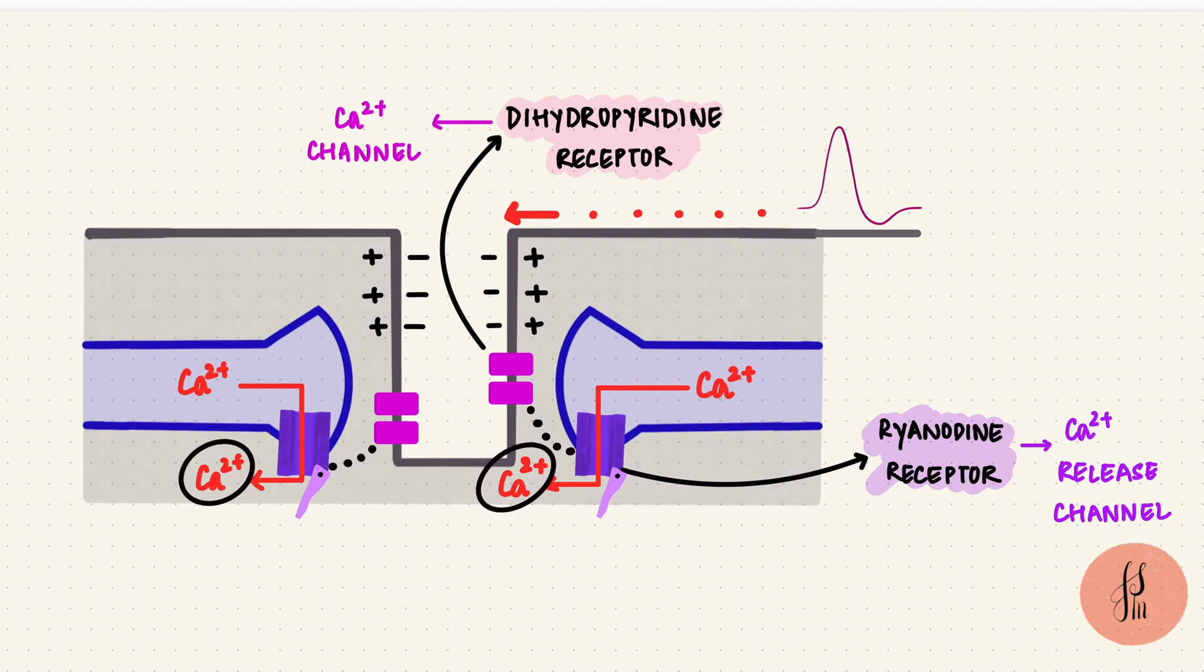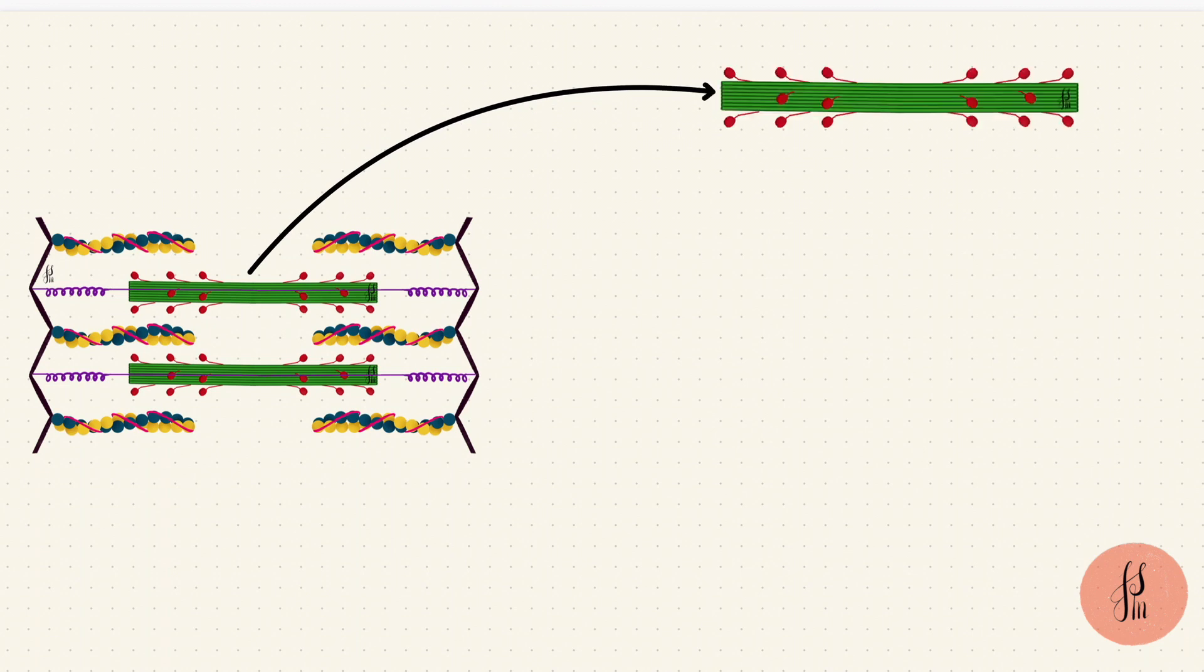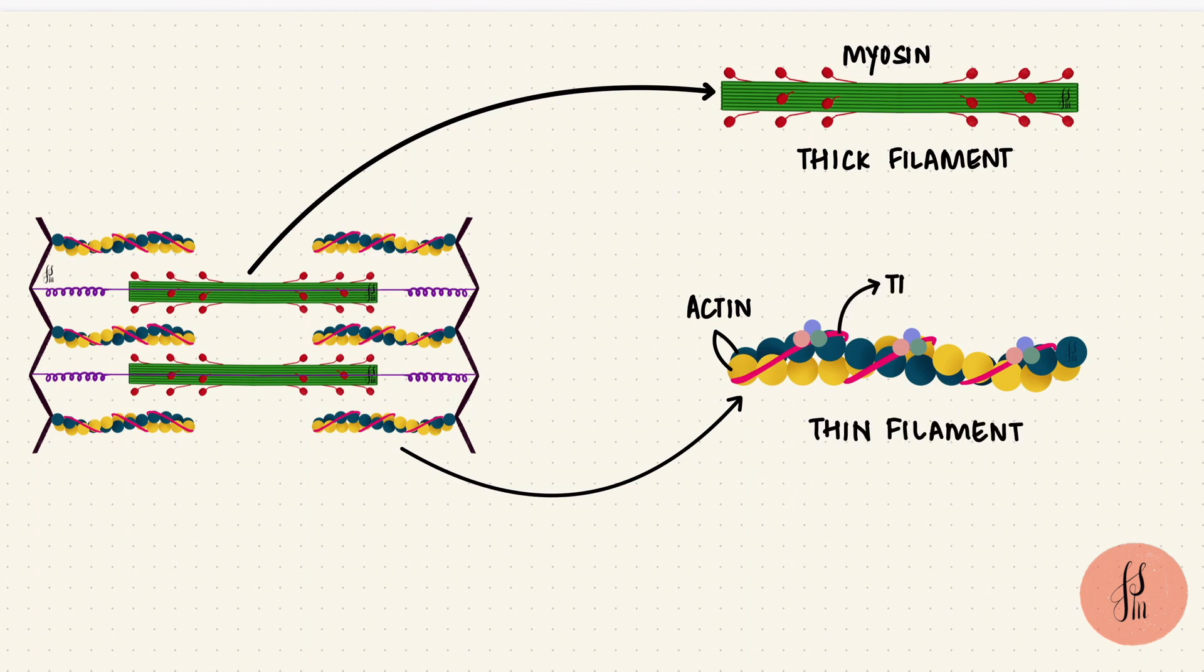Now that calcium is going to bind to troponin C. Remember the thick and thin filaments? Myosin forms the thick filament and actin forms the thin filament along with tropomyosin, which covers the binding sites on actin so that actin and myosin cannot bind. It also has troponin, troponin I, T, and C. I inhibits myosin and actin from interacting by binding to actin, T binds to tropomyosin, and C binds to calcium.